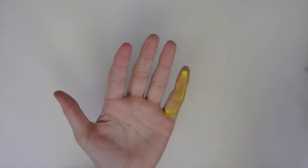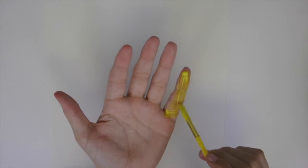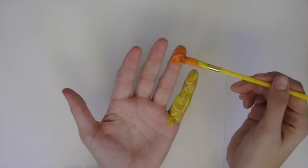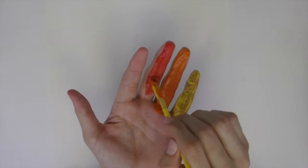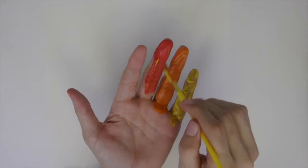Using kids finger paint, we're going to begin by painting our pinky finger yellow, our ring finger orange, our middle finger red, and our index finger green.